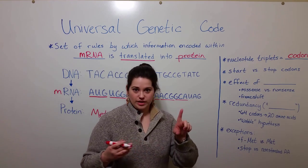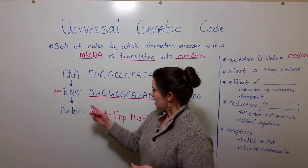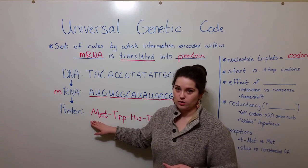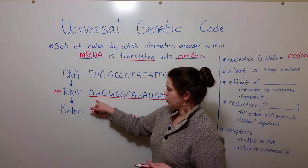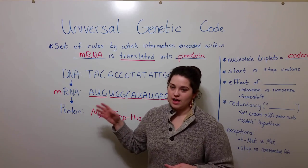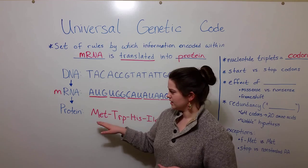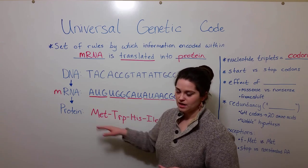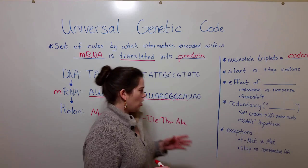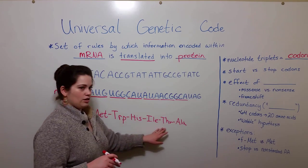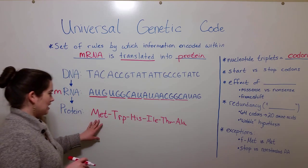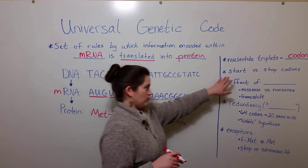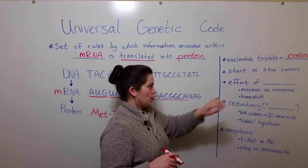UAG is one of three different stop codons. AUG, for methionine, is known as the start codon, because AUG is at the beginning of every mRNA sequence and codes for the first amino acid, which is always methionine. Of course, methionine can also be used within the protein chain, but it's always found at the beginning. That is the difference between start and stop codons.